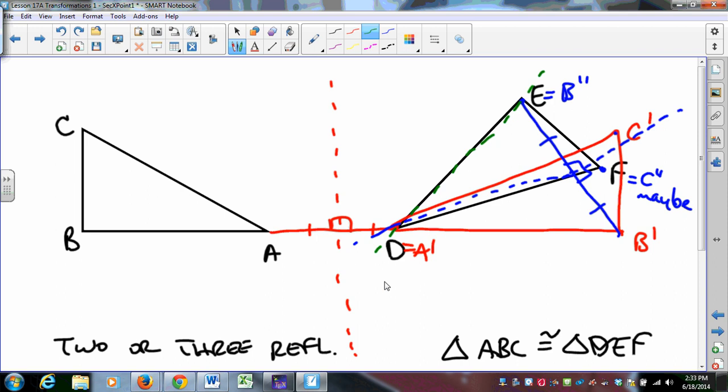Two reflections, maybe three, no more than three are necessary. That is a big deal, because isometries come in all sorts, and they really all boil down to two reflections, three reflections. Furthermore, that's a unique isometry that does the job, and that's not a bad thing to know.